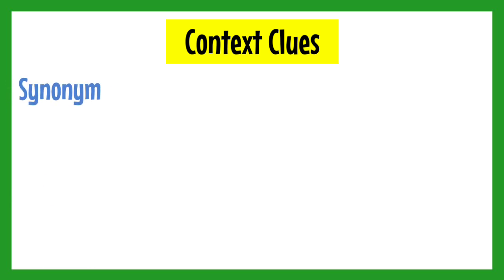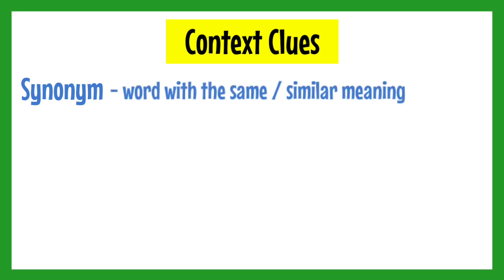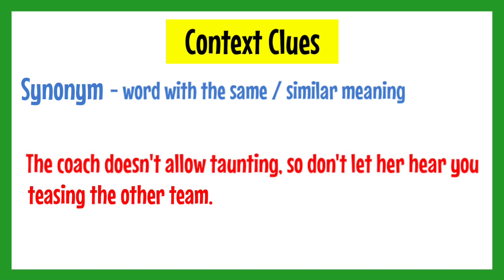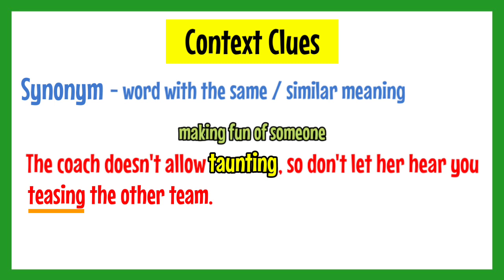Last one — Letter S for Synonym. In this case, a word with a similar meaning is given in the sentence. For example: The coach doesn't allow taunting, so don't let her hear you teasing the other team. You need to identify the meaning of the word taunting, and the synonym 'teasing' is given as the context clue. Therefore, the meaning of taunting is teasing or making fun of.